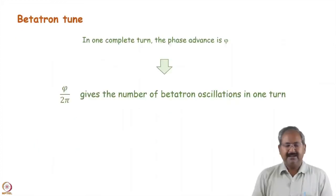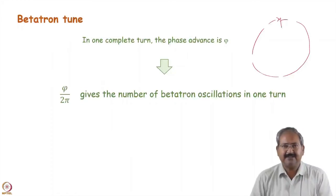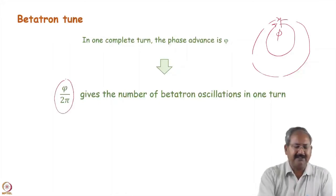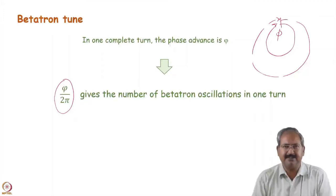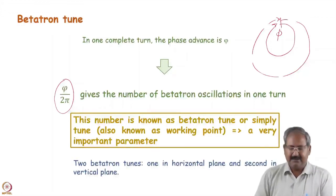The phase advance of one complete turn φ divided by 2π gives the number of betatron oscillations per turn, known as the betatron tune. The betatron tune is a very important parameter for analyzing beam dynamics in synchrotrons. There will be two betatron tunes — one for the horizontal plane and one for the vertical plane. We will study more about betatron tune when we cover chromaticity in later chapters.